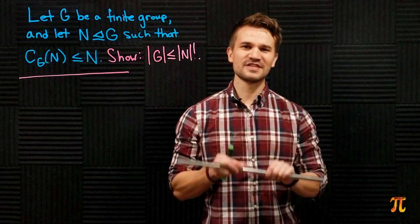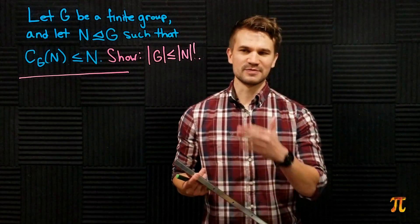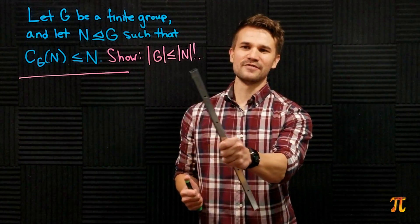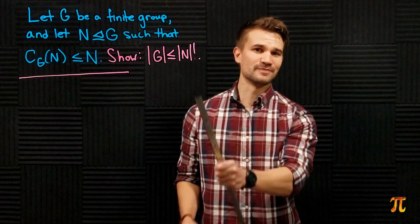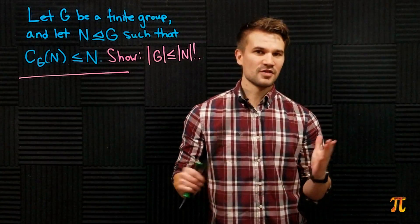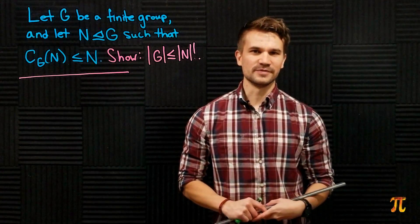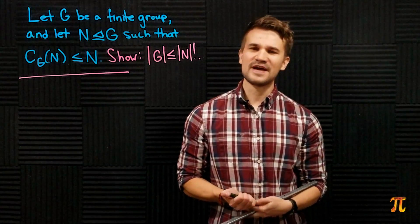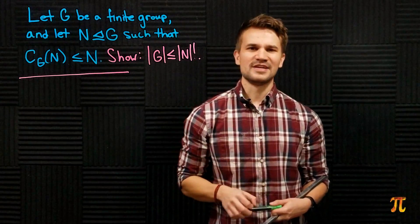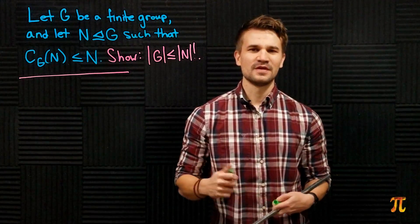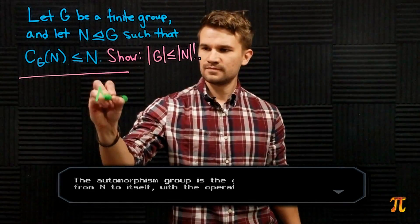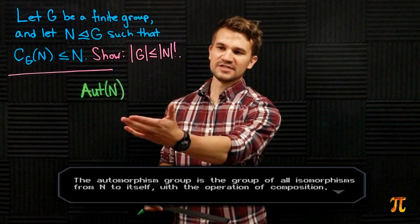When attempting a proof like this, the first thing I do is look at the conclusion I'm supposed to get and ask how I can involve aspects of that conclusion with the given objects. I see there's a factorial here, so I ask: how can I get an order of N factorial involved? The first thing that comes to mind is the automorphism group of N.